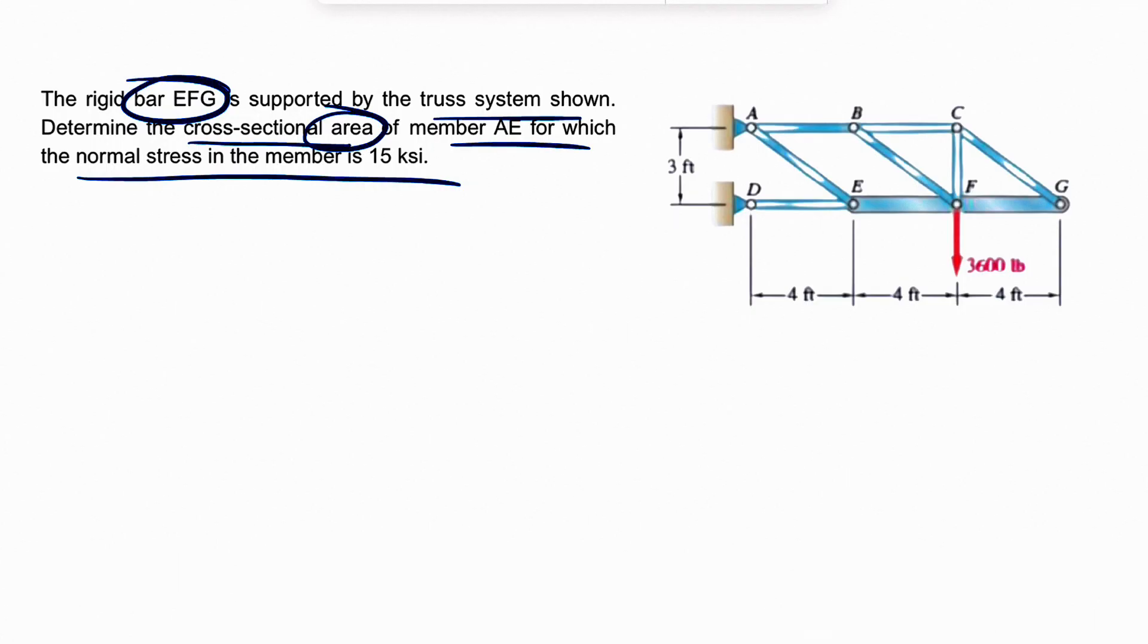So the givens that we have is the normal stress has to be 15 KSI, and also we need to figure out the area. So first of all, for doing the normal stress in member AE, we need the force, because we know stress is equal to force in member AE divided by cross-sectional area.